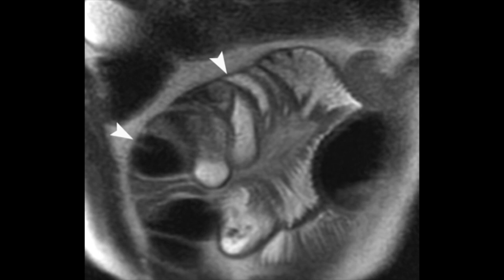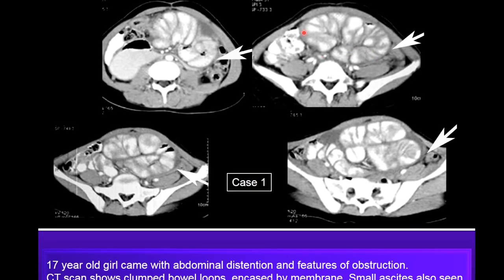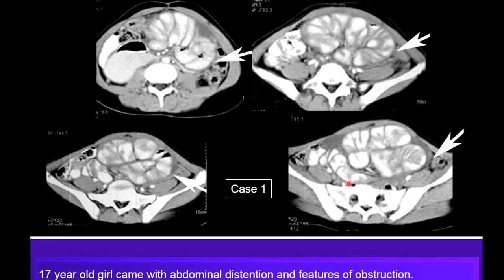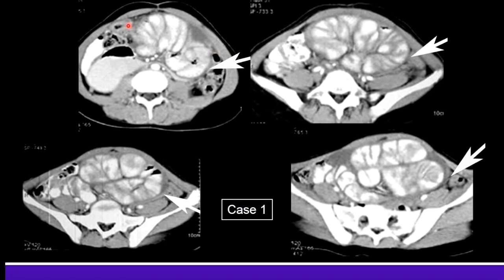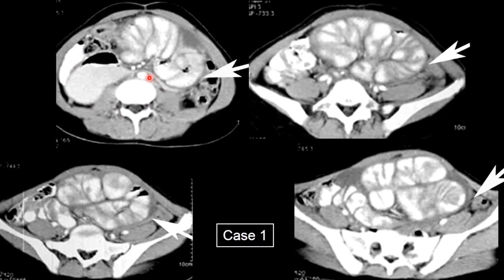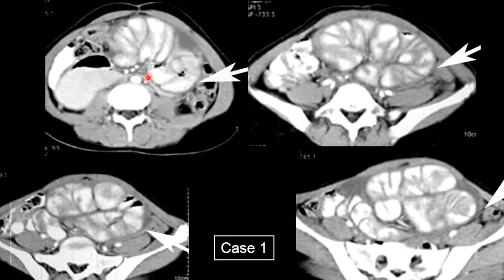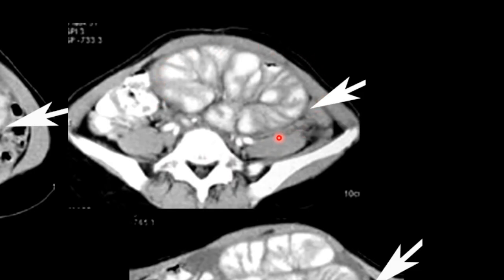MRI also shows similar findings. The first case is a 17 year old girl who came with abdominal distension and features of obstruction. Positive oral contrast was given and multiple small bowel loops encased in a membrane-like structure are seen. Proximal bowel loops are dilated but the loops inside the cocoon do not get the opportunity to dilate because they are bound by the encasing membrane.